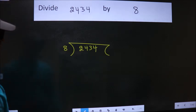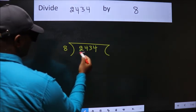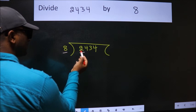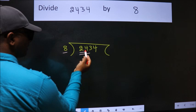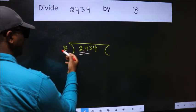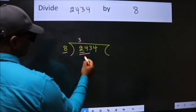Next. Here we have 2. Here 8. 2 is smaller than 8. So, we should take two numbers, 24. When do we get 24 in 8 table? 8 threes, 24.